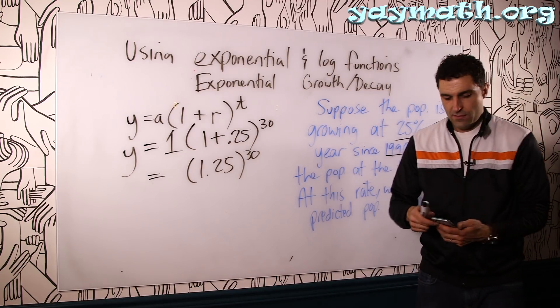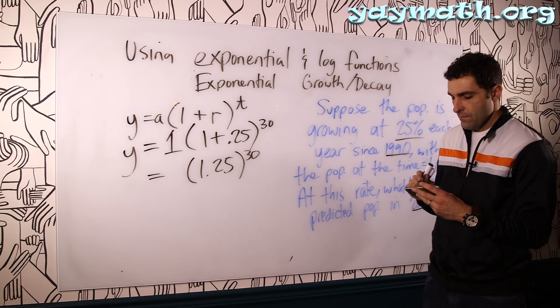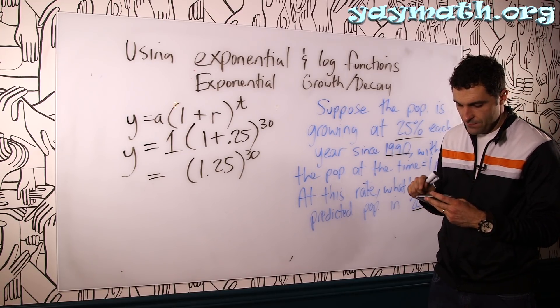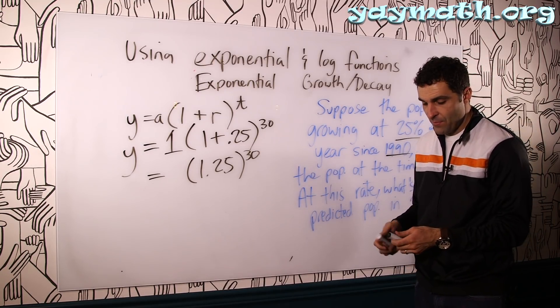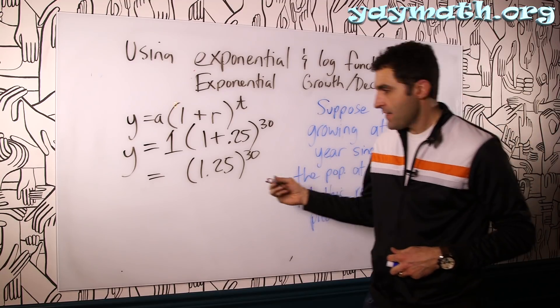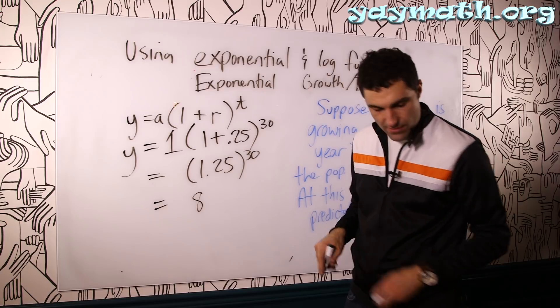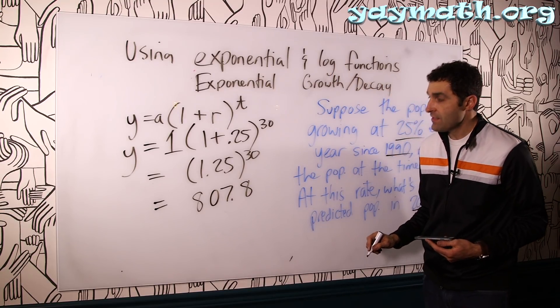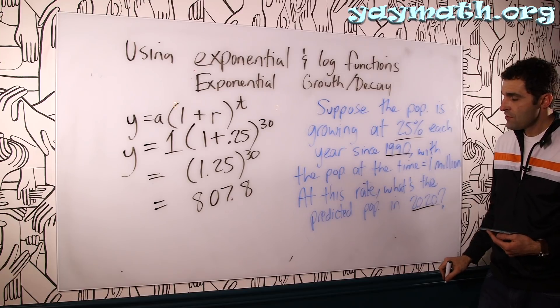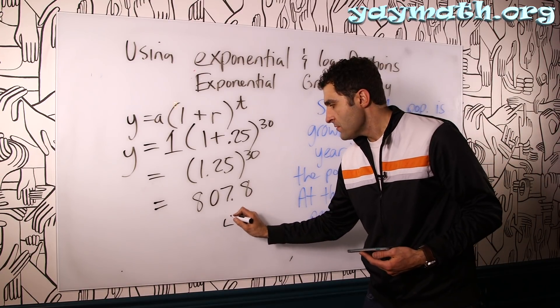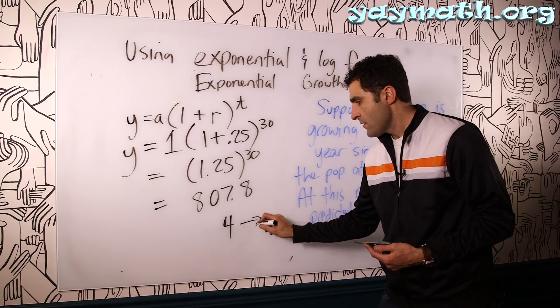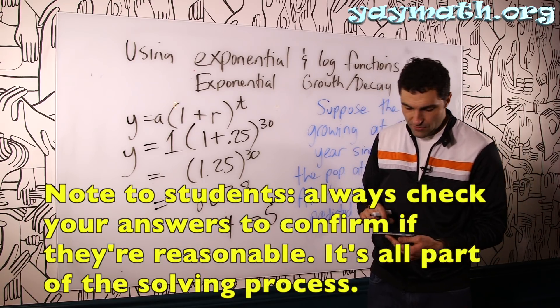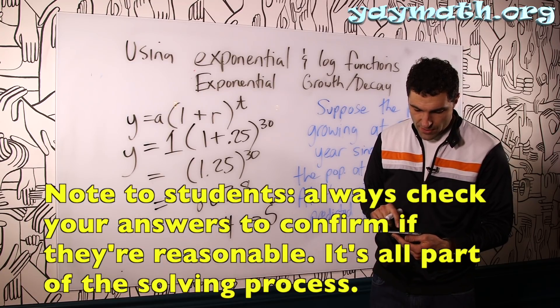Here it is. 1.25 to the 30. Whoa. Look at that. That's an explosive population. That is 807.8. Isn't that nuts? That's massive population growth. 25%. That's huge. That means for every four people that live there, the next year, 25% more would be five. A quarter of that. So one more. That can't, is that right? That's incredible growth. 1.25 to the 30. Yeah.